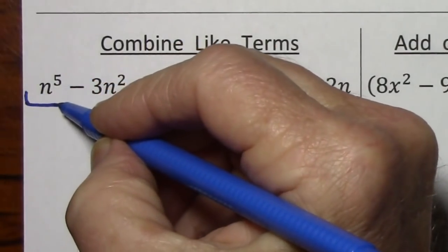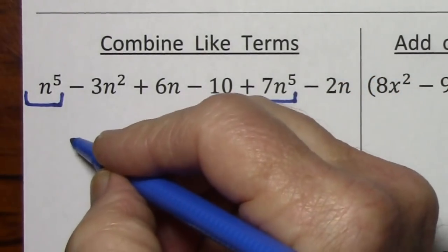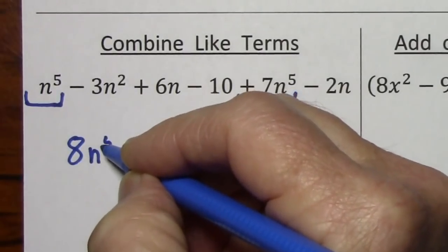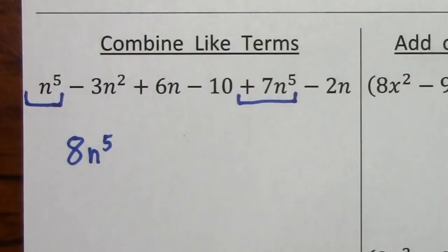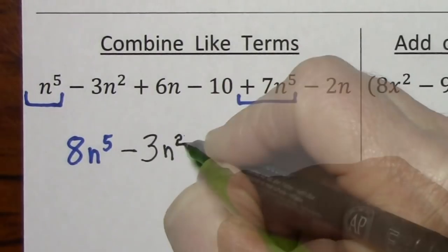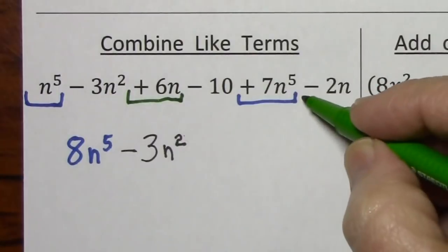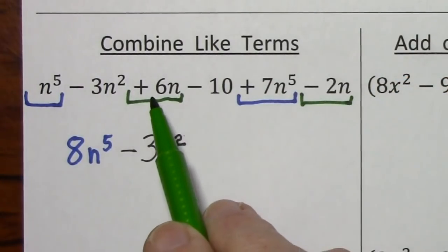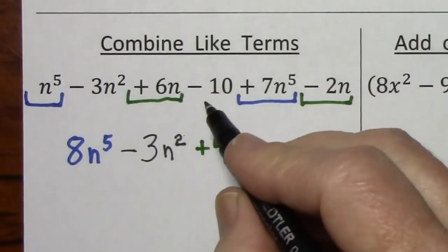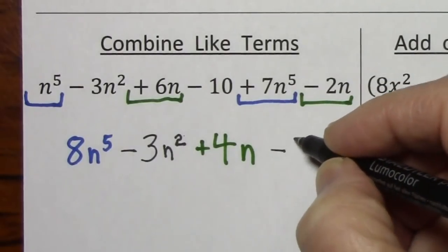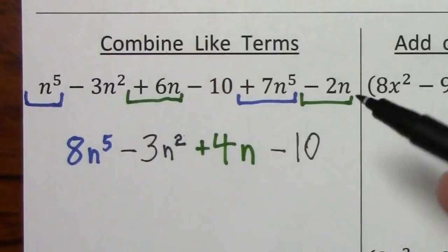I'll underscore the first two like terms. When we combine them, we get 8n to the fifth. For n squared, there's no other n squared terms, so we'll just bring that down. Looking at n, we have an n term here as well. Combining the 6 and the negative 2, and the last term to worry about is negative 10 — there's nothing else to combine that with. So here's our answer, the simplified form of the original polynomial.